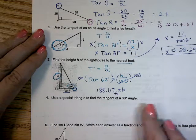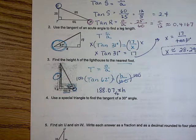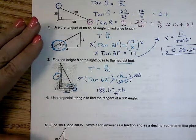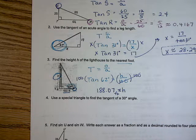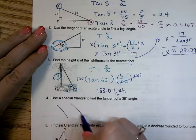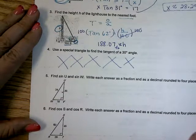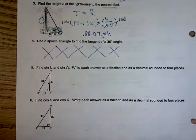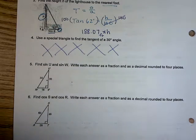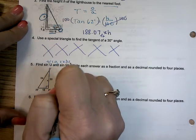Number four we're not going to do — it's just showing that if we used our special triangles, you could apply trig ratios there too. But when you have special triangles, you're looking for your answer in radical form, and you can never get back to radical form from the calculator. Number five just wants to find the sine of U and sine of W — it wants the fraction, the trig ratio.